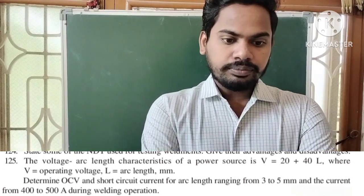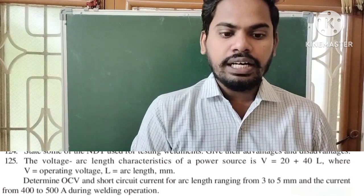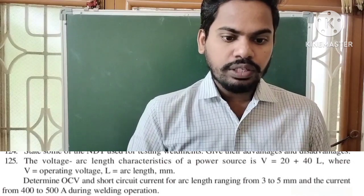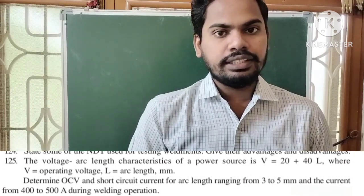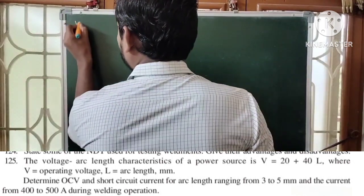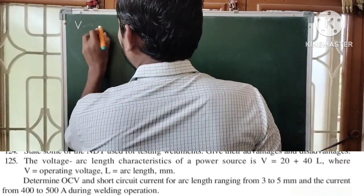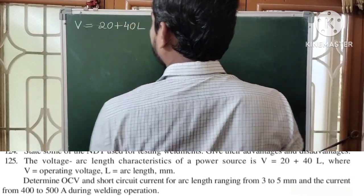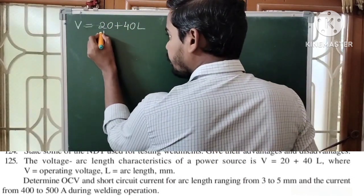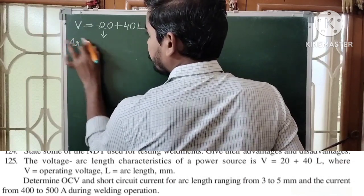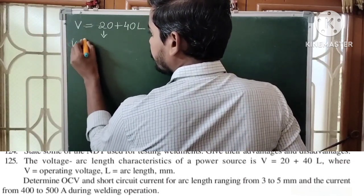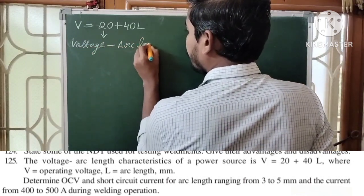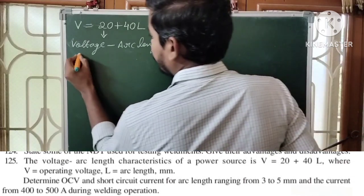Here we are given the voltage arc length characteristics of a power source. The equation is V = 20 + 40L, which is known as the voltage arc length equation or voltage arc length characteristic.